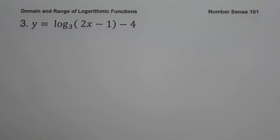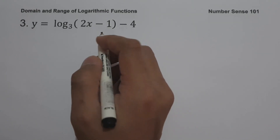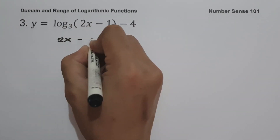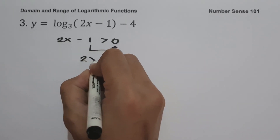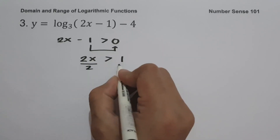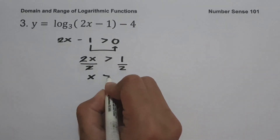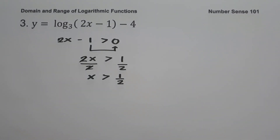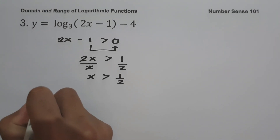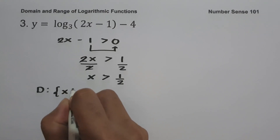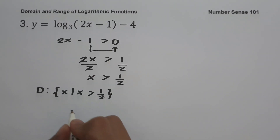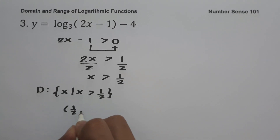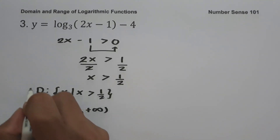Example number three: y equals log base 3 of (2x minus 1) minus 4. To find the domain, let us equate our argument greater than zero, so we have 2x minus 1 greater than zero. Moving negative 1 to the other side gives us 2x greater than 1. Dividing both sides by 2 gives x greater than one half. In set builder notation: the domain is the set of x values such that x is greater than one half. In interval notation: from one half (not included) up to positive infinity.